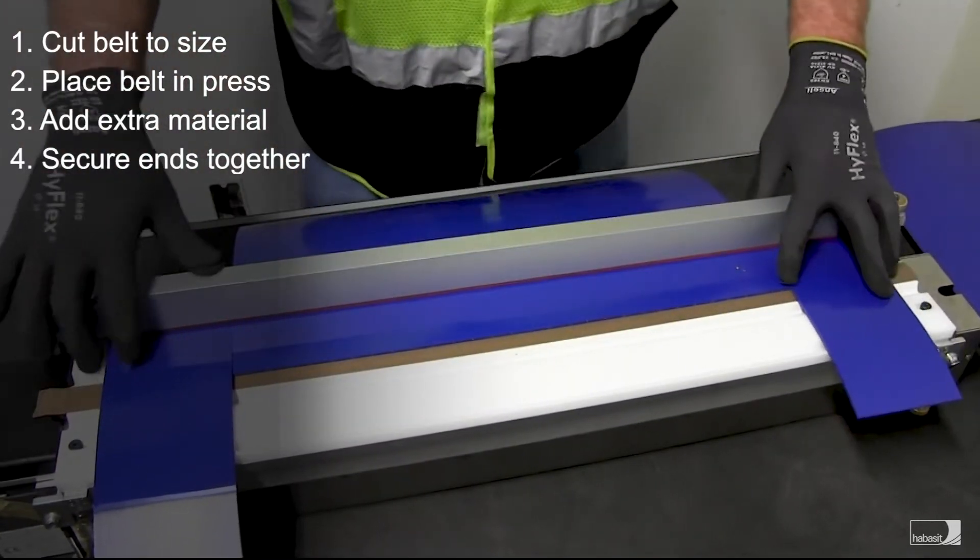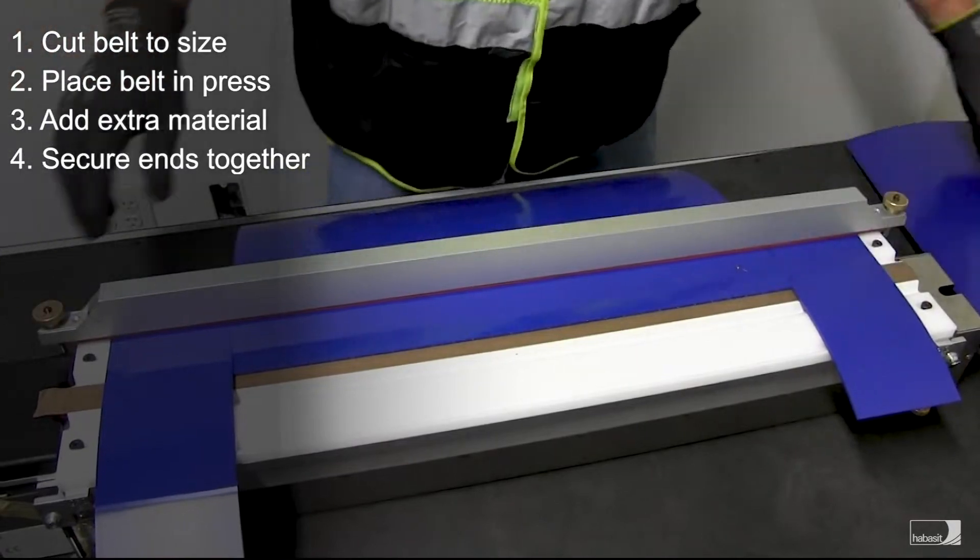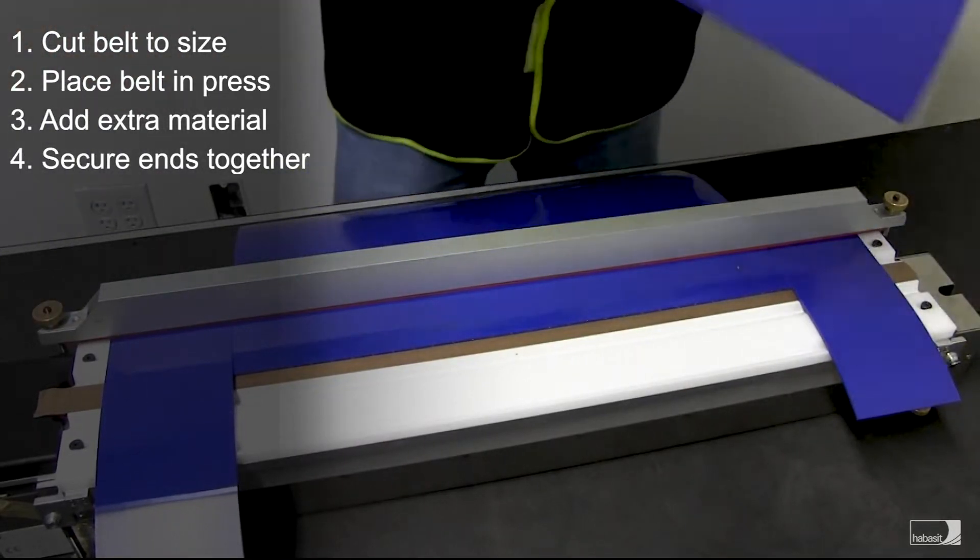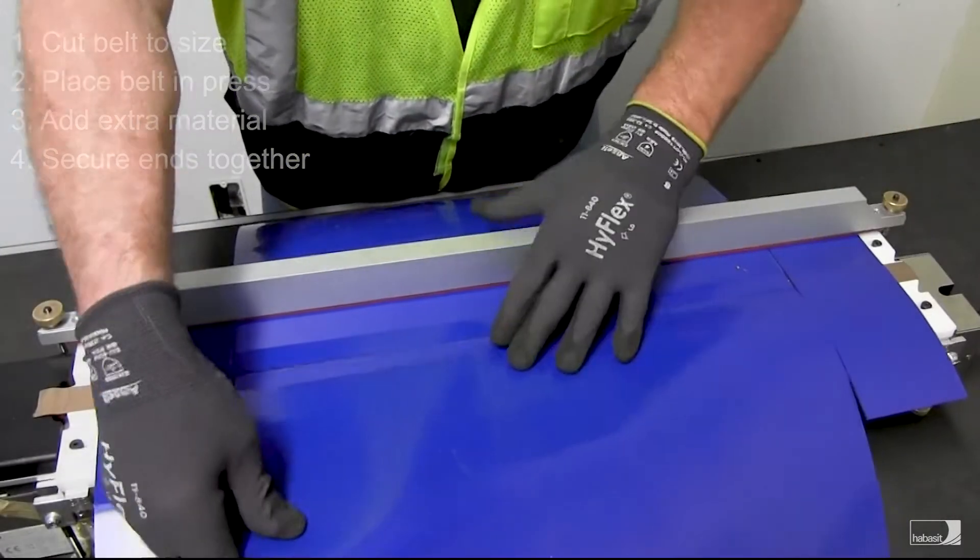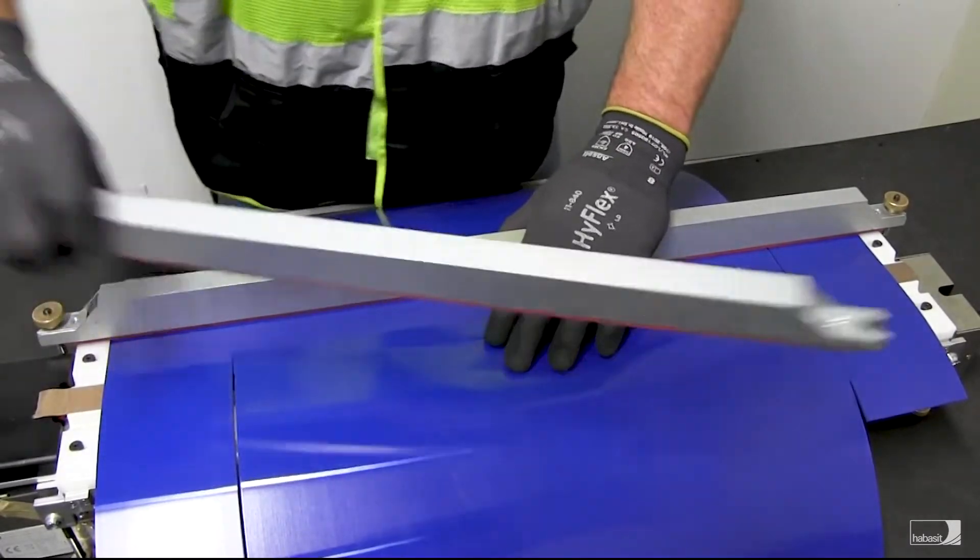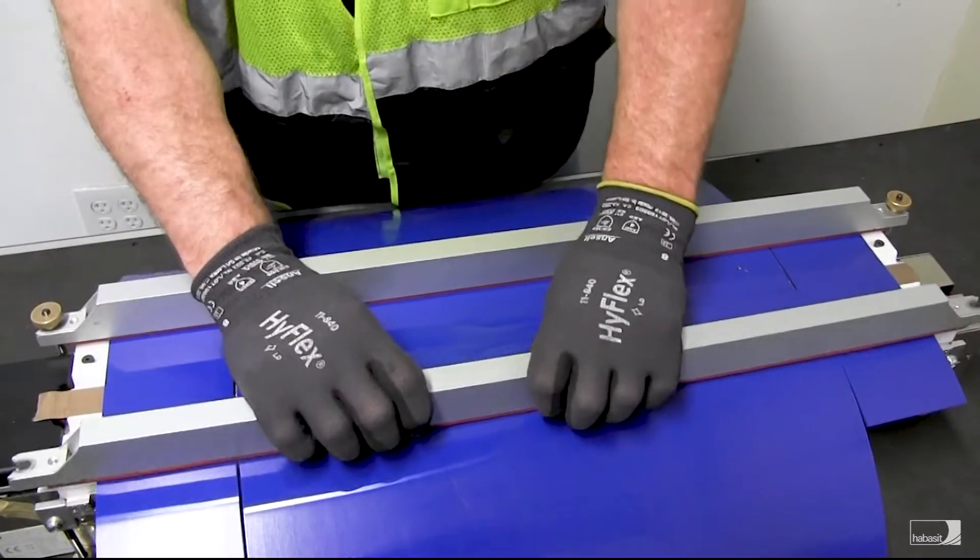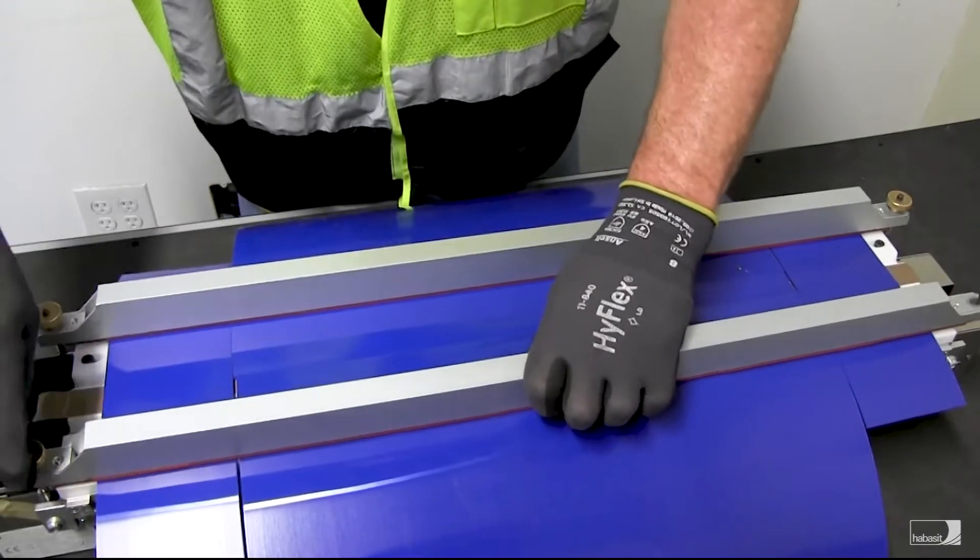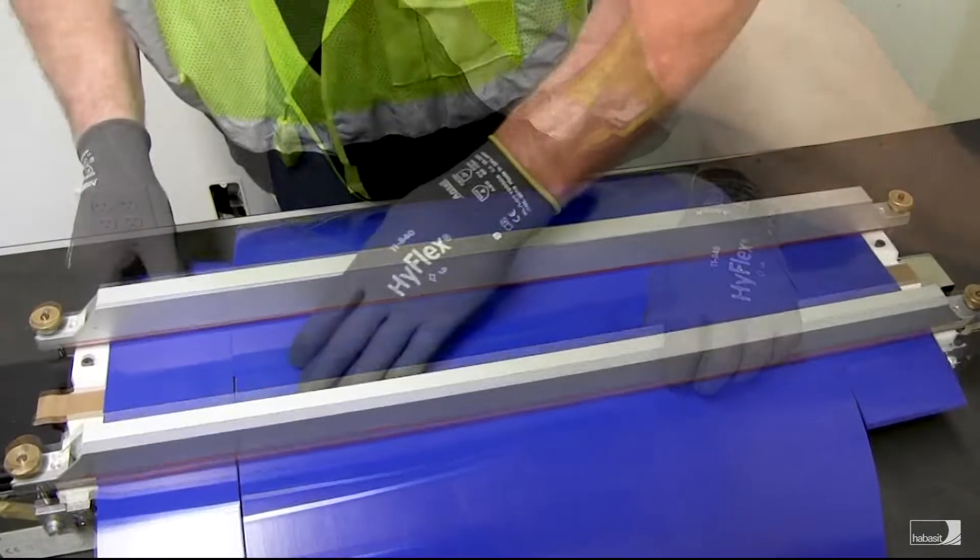Secure the first end with the clamping bar to hold the belt in place. Repeat the process for the second end utilizing the second hold down clamp ensuring the belt edges align. Before moving on to the next step, ensure both ends of the belt match together without a gap present.